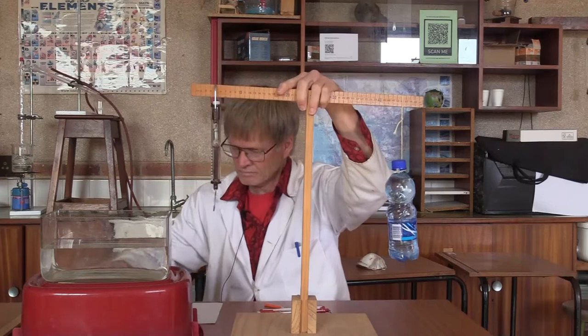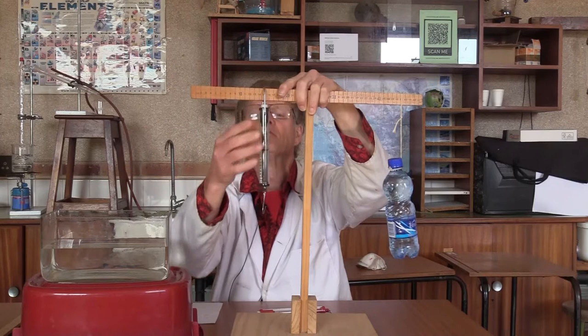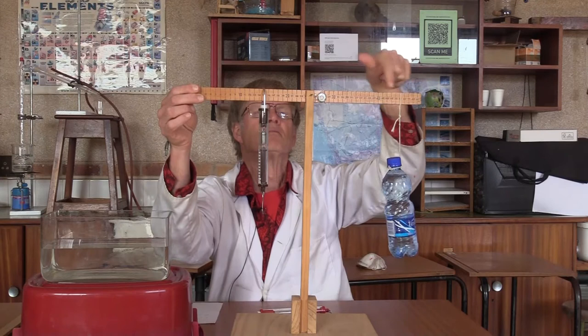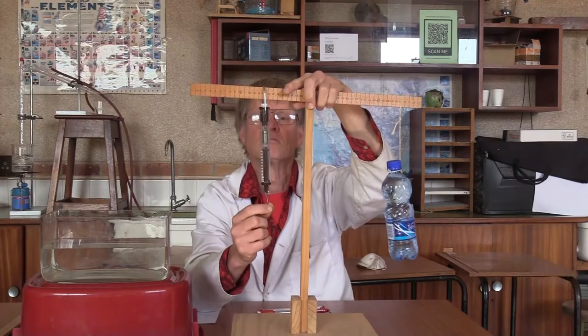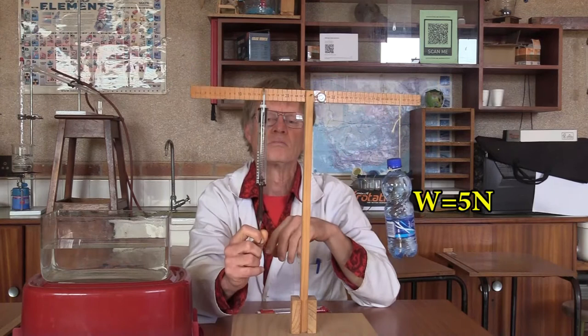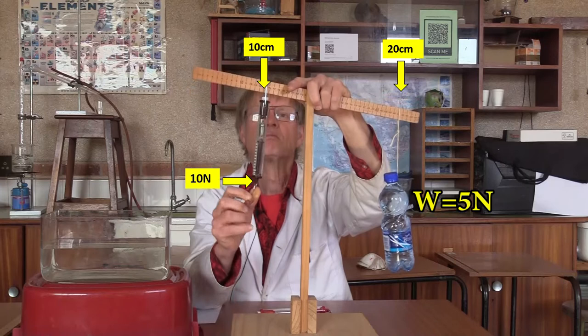We record this. And now move the spring scale closer. We halve the distance. That is still 20. And this is 5, 10 centimeters from the fulcrum. And when we balance it, we see that the effort needed is 10 newtons to balance the 5 newton bottle.